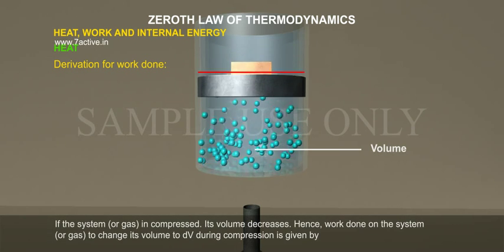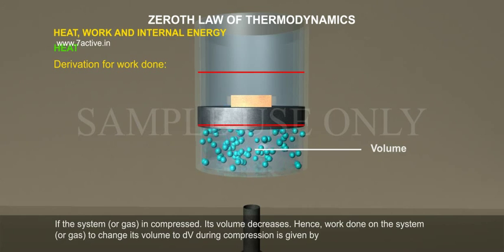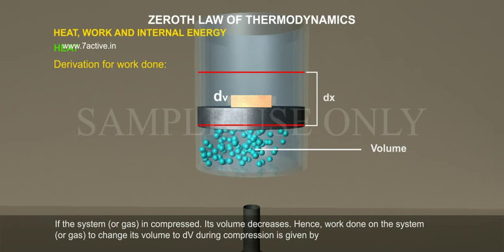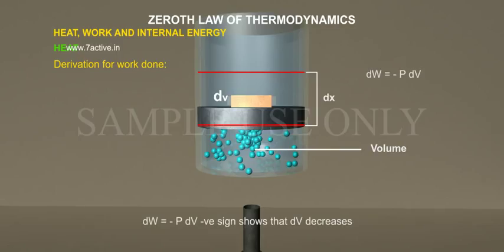If the system or gas is compressed, its volume decreases. Hence, work done on the system or gas to change its volume to dV during compression is given by dW is equal to minus P dV.